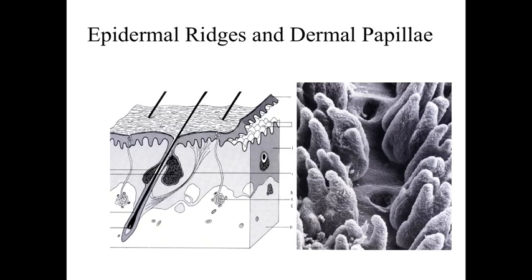When we take a look at the epidermis, it's important to recognize that we're going to have what are referred to as epidermal ridges and dermal papillae. Think of these as interdigitations — essentially finger-like projections in three dimensions — where the dermal papillae are extensions of the dermis reaching up, and the epidermal ridges are extensions of the epidermis going down, interdigitating in almost a tongue-in-groove orientation, hooking up with one another.